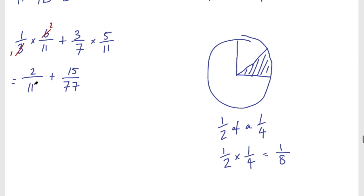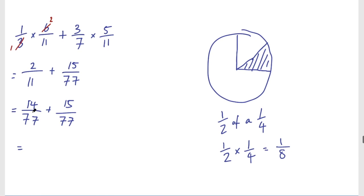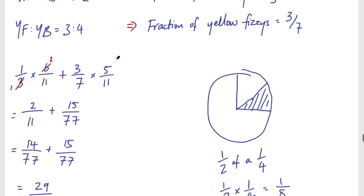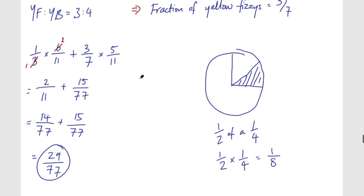Now I need to add these fractions with a common denominator. 11 goes into 77, so I multiply 2/11 by 7 to get 14/77. Then 14/77 plus 15/77: adding the numerators gives 29/77. So the fraction of all sweets that are fizzy is 29/77. That's the first method, involving changing ratios into fractions.